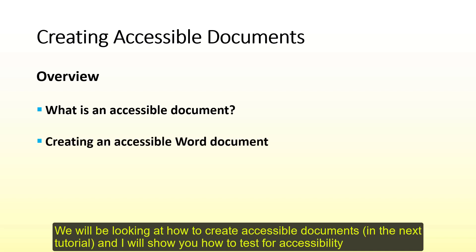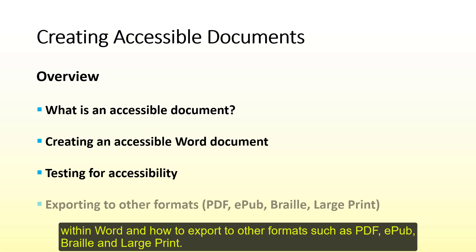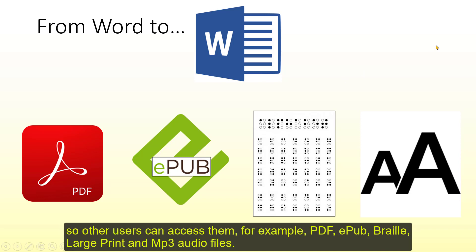We'll be looking at how to create an accessible document — that will be one tutorial. I will also show you how you can test for accessibility within Word and how you can export to other formats such as PDF, EPUB, Braille, and large print. The secret is really having a good solid Word document that is well structured, and that then allows you to export to these other formats so other users can get access to them — such as PDF, EPUB, Braille, large print, and MP3 audio as well.